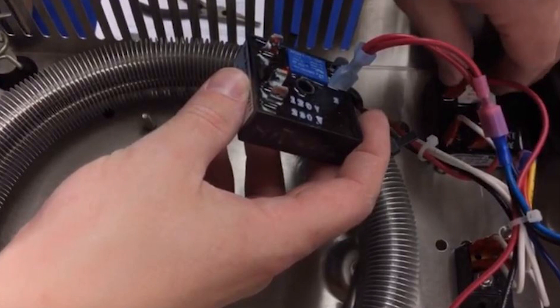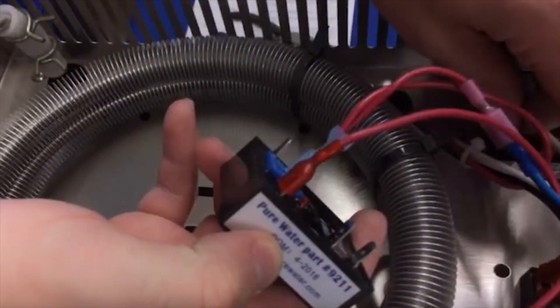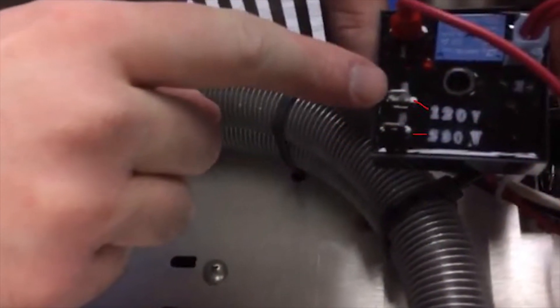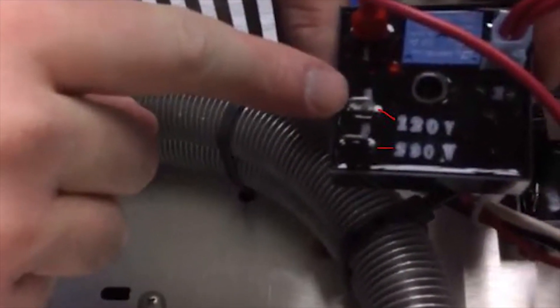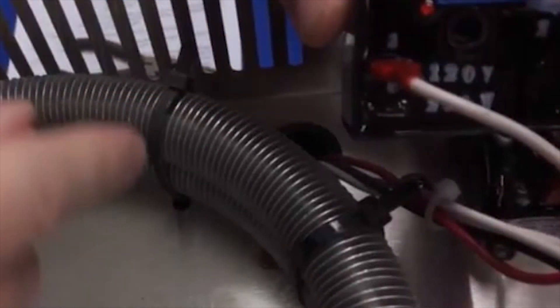Next, remove the number one wire that will attach to the number one spot right here. Next we'll remove the number three wire. Again, number three has 120 and 230, so because this is 120 volts, this is where we'll connect it. If this was a 230 volt machine, we'd connect it to the 230 volt connector.